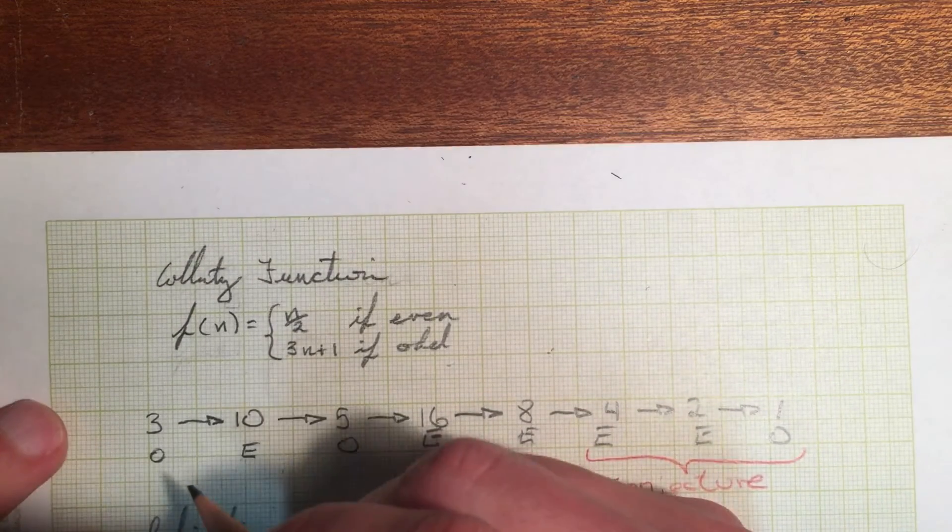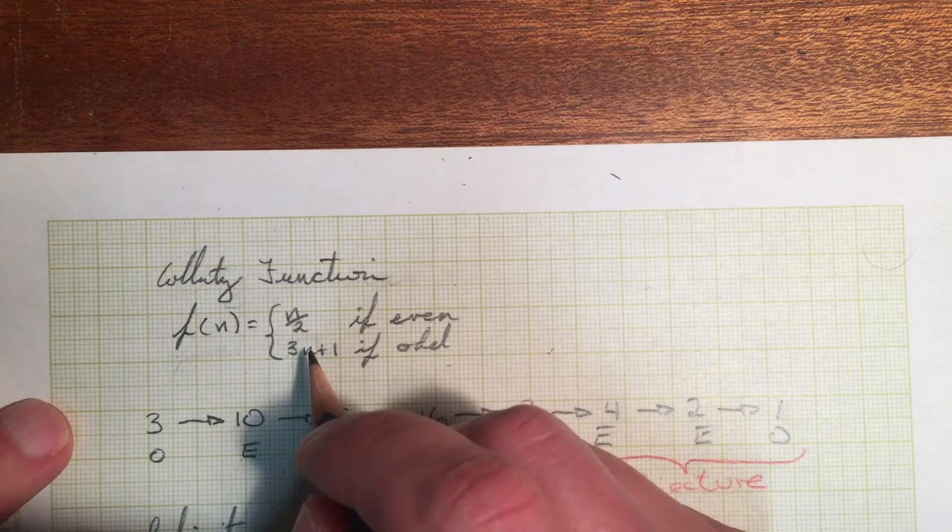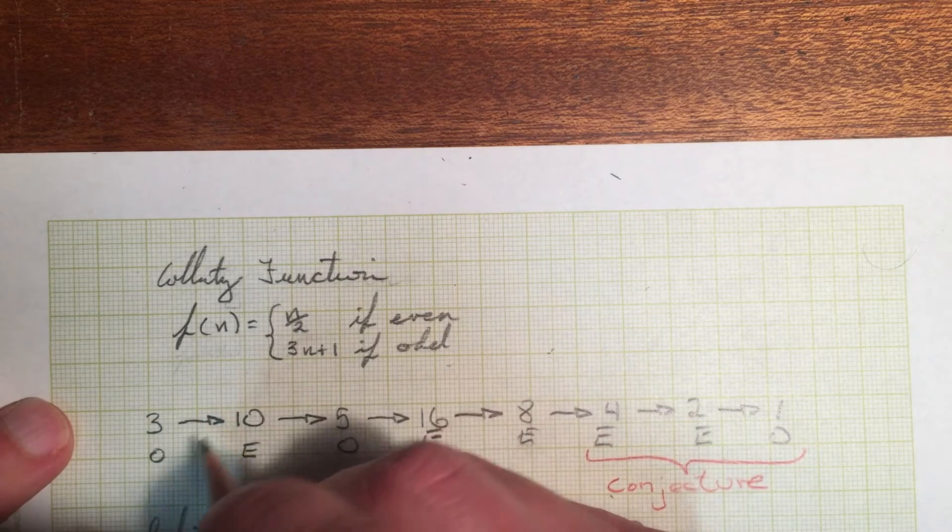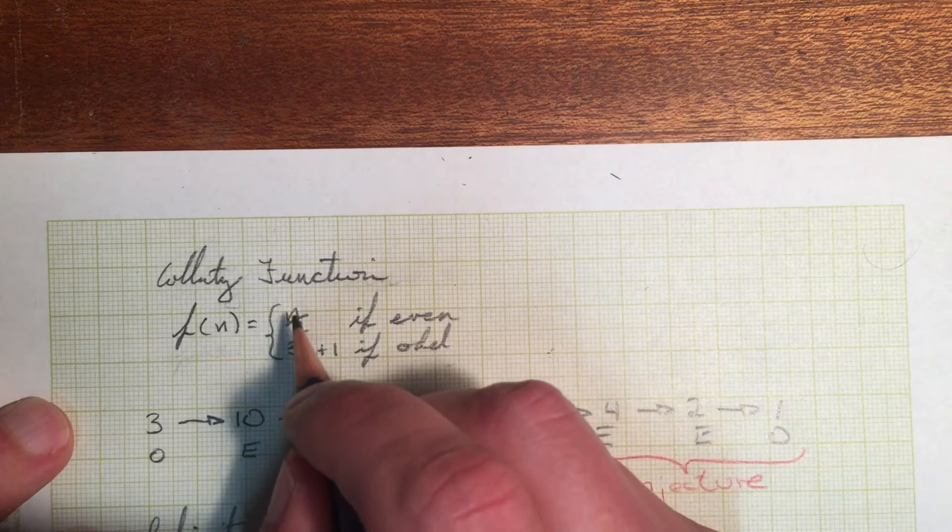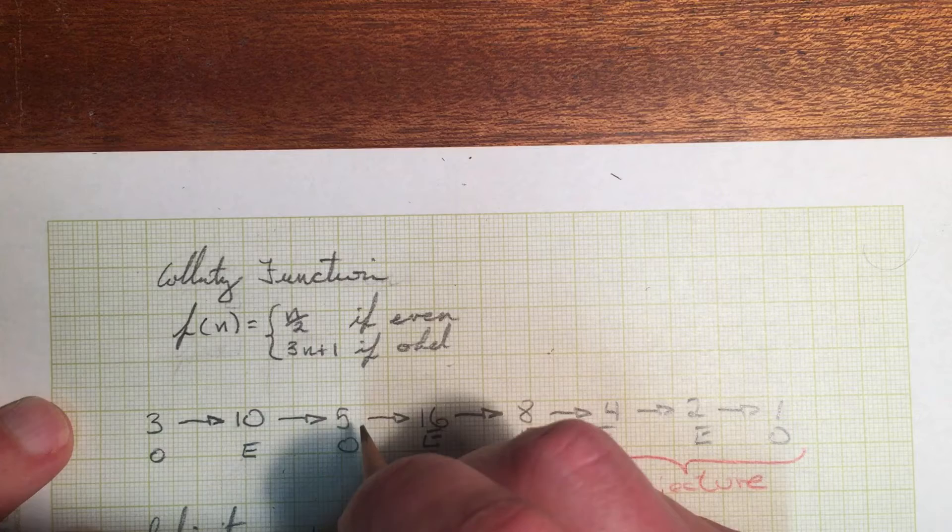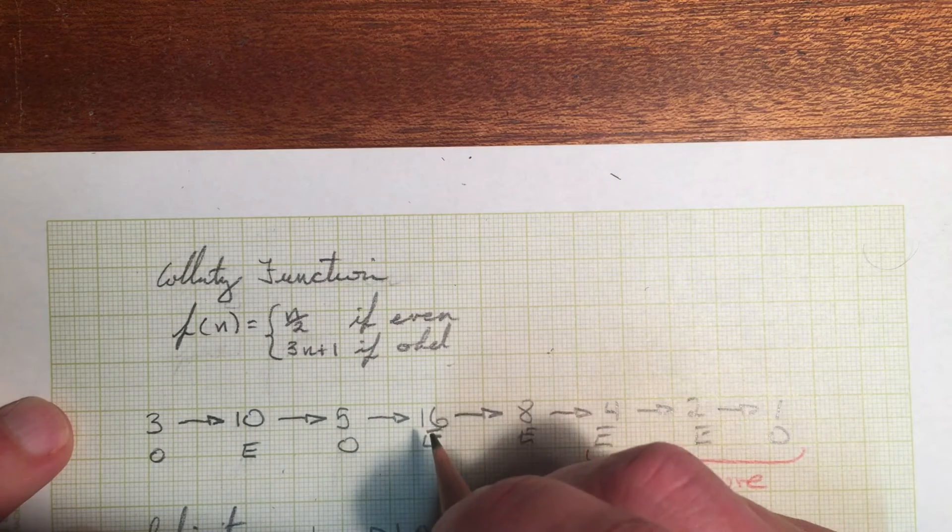So we can see an example here. If we take our initial number three, well, three is odd, so we multiply it by three, get nine, and add one, and that's ten. So our next number now is even, so we're going to divide it by two, that gives us five, which is odd. So we multiply by three and add one, which gives us sixteen.